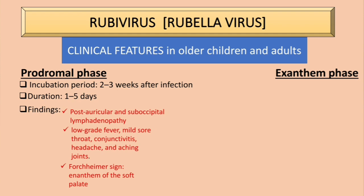The exanthem phase lasts two to three days. Note that the rash caused by measles usually lasts up to six days, but for rubella it is three days — so the rash caused by the Rubella virus is also called the 'three-day rash.' Three days for rubella; six days is for measles.